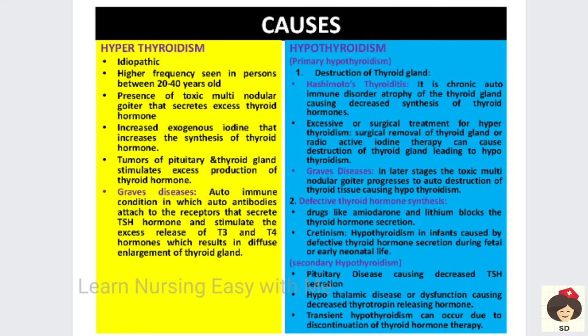Next is defective thyroid hormone synthesis. Drugs like amiodarone — an antiarrhythmic drug for heart diseases — and lithium, an antipsychotic drug, block thyroid hormone secretion by affecting iodine metabolism. There is also a condition called cretinism, which is hypothyroidism in infants. During pregnancy, the baby's thyroid gland may not develop properly, resulting in decreased secretion of thyroid hormone and defective thyroid hormone synthesis.